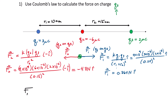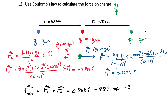For the net force on Q3, simply add both forces as vectors: 0.864 in the positive x direction plus −4.8 in the negative x direction. Adding them together gives a net force of −3.936 newtons, with the negative sign indicating the force is in the negative x direction.